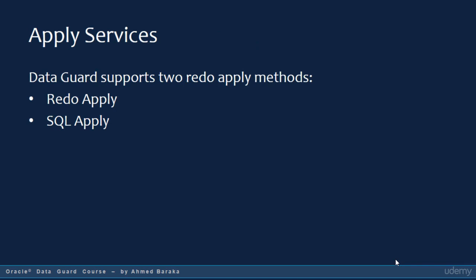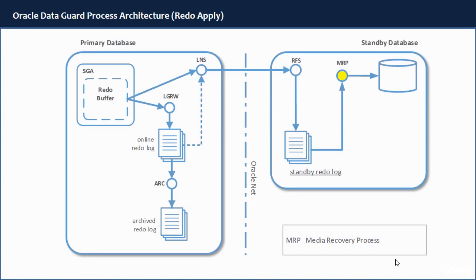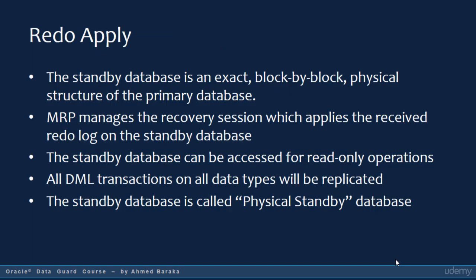Apply Services can be configured to work in one of two methods: RedLog Apply or SQL Apply. When you configure your Data Guard to use RedLog Apply, the process responsible for applying the received RedLog blocks in the standby database is called MRP, which stands for Media Recovery Process. MRP will read the received blocks and apply them on the standby database. MRP manages the recovery session — that is, the apply operation, the process of applying the received RedLog blocks into the standby database.